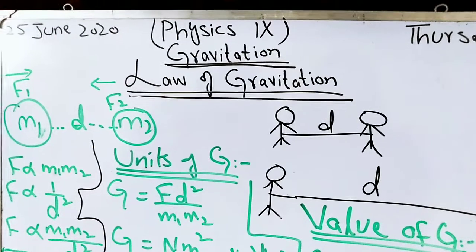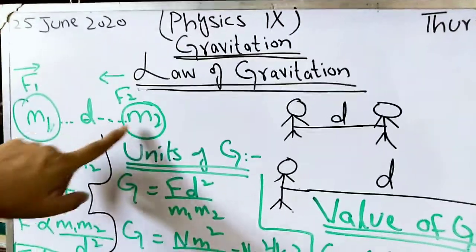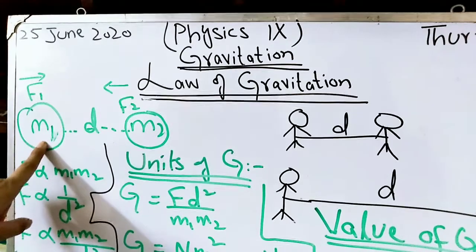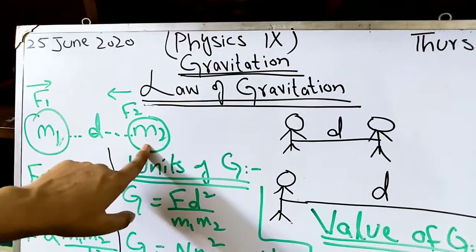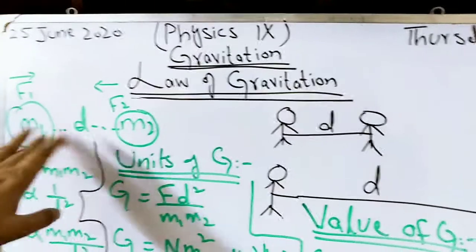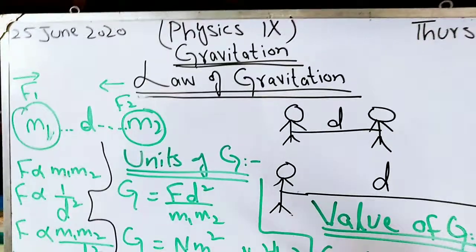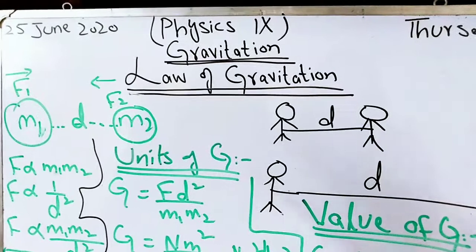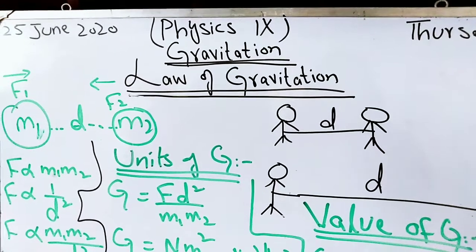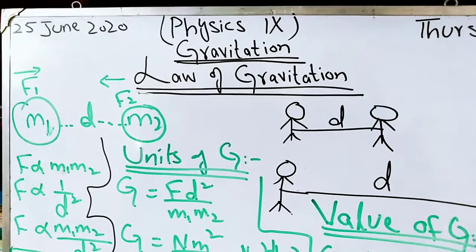We start with two masses M1 and M2, separated by a distance D. M1 is exerting a force on M2, and M2 is also exerting a force on M1 — both are attracting each other. This force is directly proportional to the product of their masses. If the product of masses is greater, the force is also greater; if the product of masses is less, the force is also less.